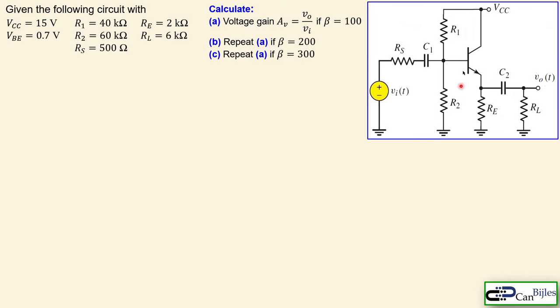We have this circuit here given with a couple of values. We have five resistors in total in this circuit, the VCC which is our DC voltage source, and we have the VBE. This circuit is called the emitter follower because the output, which is connected through the capacitor CE2, is connected to the emitter node of the BJT.